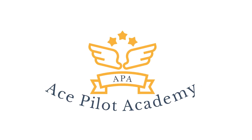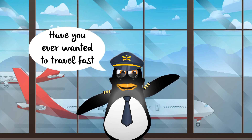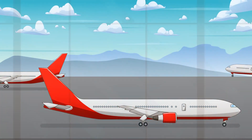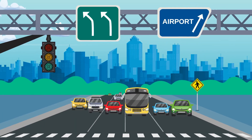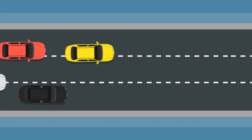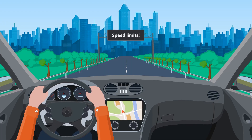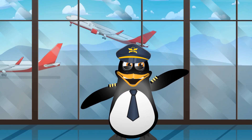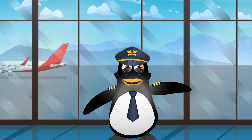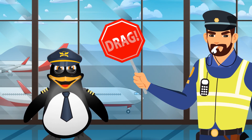Welcome to the Ace Pilot Academy. Have you ever wanted to travel fast? Airplanes, among other aircraft, allow us to travel quickly through the air, unhindered by many factors that affect ground vehicles, like stoplights, road friction, and speed limits. Although we can travel quickly through the air, we still have a grumpy traffic cop that keeps us from going as fast as we would like: drag.